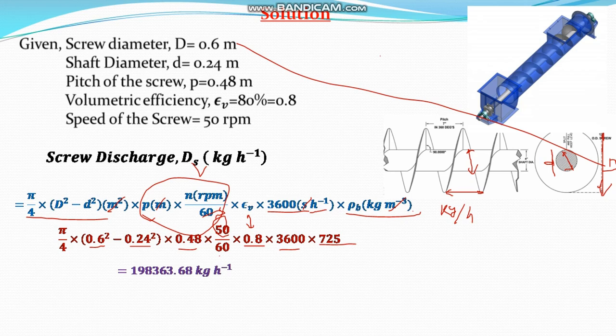Since in the question it is asked ton per hour, you have to divide by 1000. 1000 kg is one ton. Therefore,